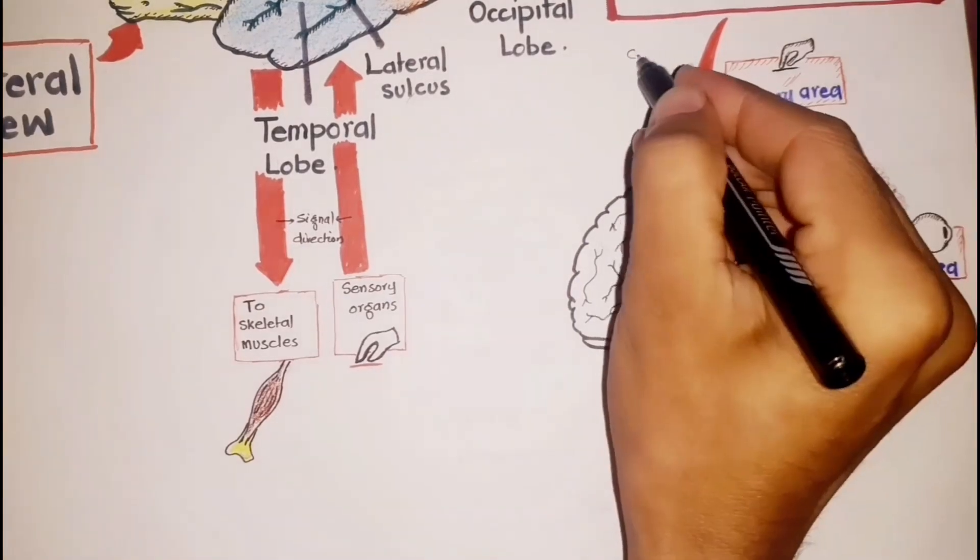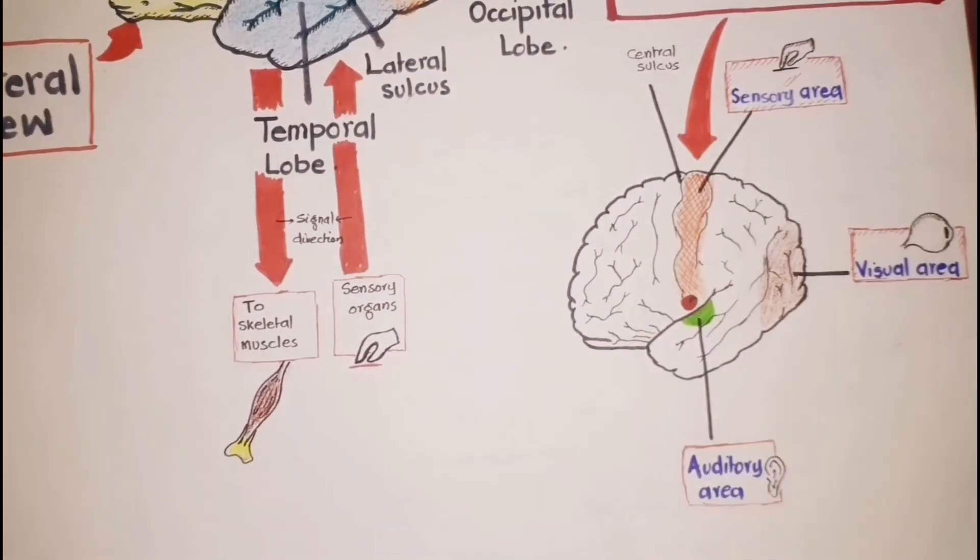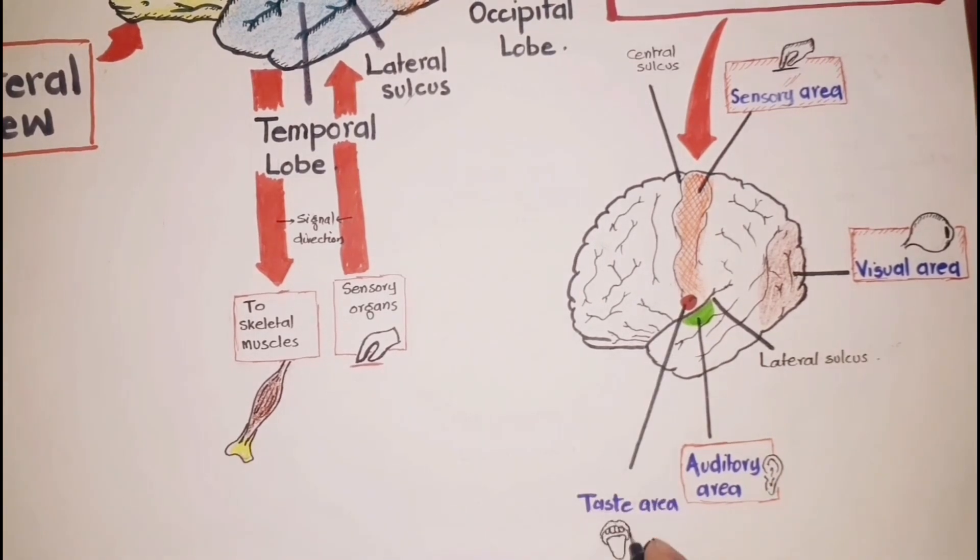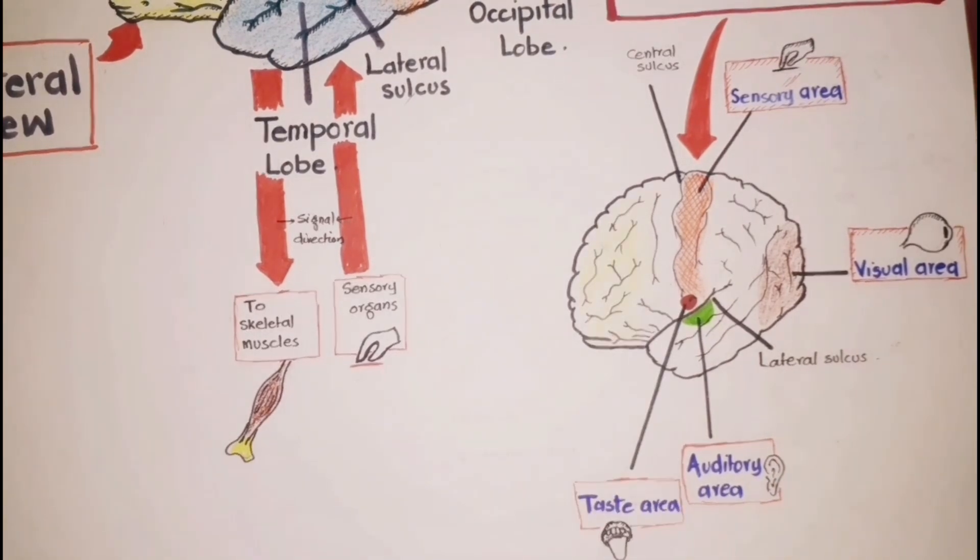The sensory areas for taste are located near the base of the central sulcus along the lateral sulcus. The sense of smell arises from centers deep within the cerebrum.